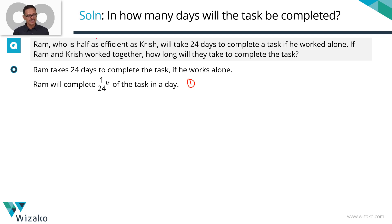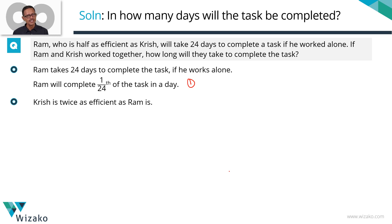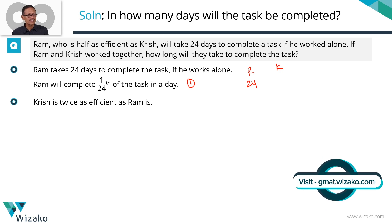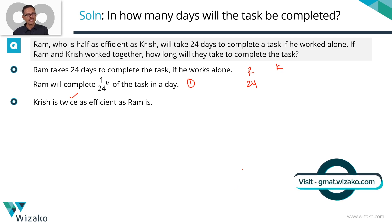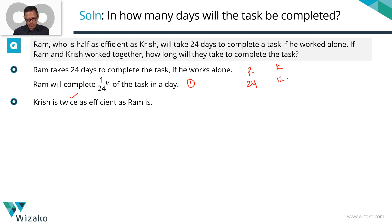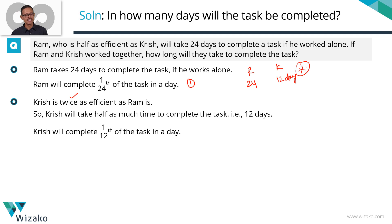The second statement tells us that Ram is half as efficient as Krish, which we can think of as Krish being twice as efficient as Ram. This is the only place where we need to exercise caution. If Krish is twice as efficient — meaning he can get twice as much work done in a given time — Krish is actually going to take half as much time as Ram. So Krish is going to take only 12 days. If we interpret this step right, then the rest is very straightforward.